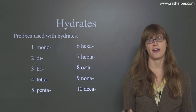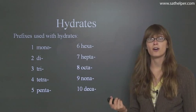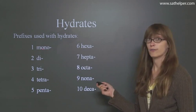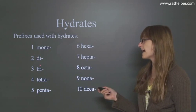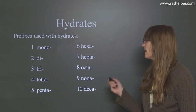So here are the prefixes that you use with hydrates. So if you have just one molecule, it's going to be mono. If you have 2, it's going to be di, tri, tetra, penta, hexa.